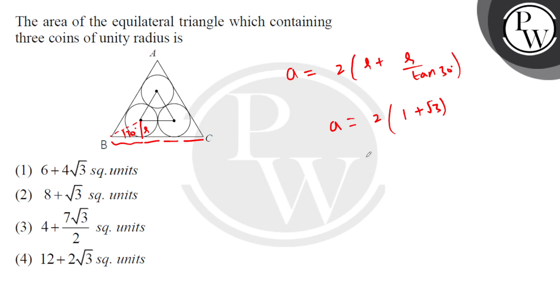Now our formula is root 3 by 4 into a squared. So which is root 3 by 4 times 1 plus root 3 whole squared.